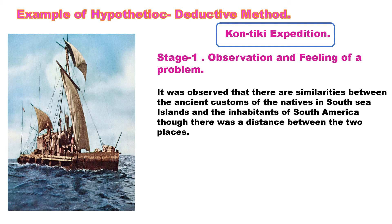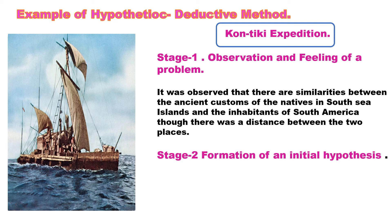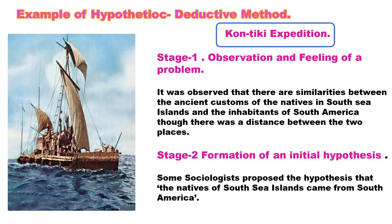The South Sea islands and South America were very far away from each other, yet the people living in both places were very similar in their habits and customs. This was the observation, and the problem was: how is it that, if they were so far away from each other, they are still so similar? The second stage is the formation of an initial hypothesis. The guess was that the people from South Sea islands might have come from South America. Some sociologists proposed the hypothesis that the natives of South Sea islands came from South America.